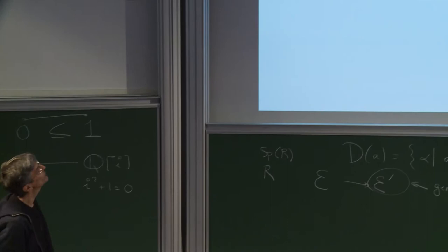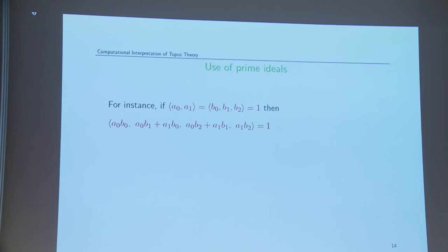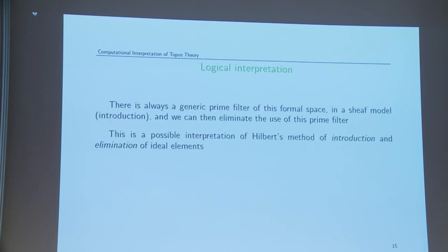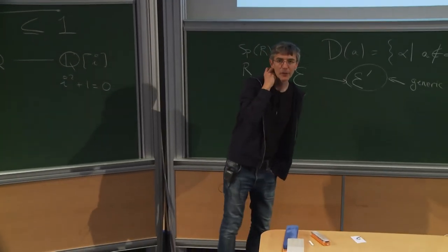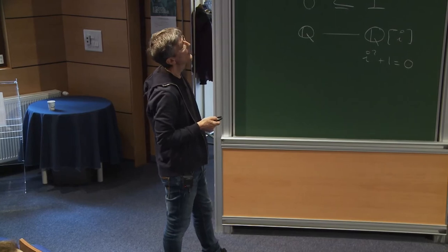What you get — reminiscent of Gauss's lemma — is: if a polynomial σ is a product of two other polynomials, you have these relations in the Zariski spectrum. This is the essence of the classical argument, and this is purely constructive — you have not used Zorn's lemma. And what you do is exactly what you do classically, but in an arbitrary topos, provided you make a change of topos. This is concrete: if you give me two polynomials, what is claimed is that there is a relation between the products of coefficients, and by doing things in this way, you have an algorithm that will compute this relation. As noted by André Joyal, this is really a possible interpretation of Hilbert's method of introduction and elimination of ideal elements.